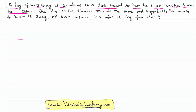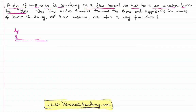So there is a dog standing on a board — assume this is the board, this is the dog — standing on it in such a way that this is the shore, and the dog is on a board floating on the water. From the shore it is at a distance of 10 meters.